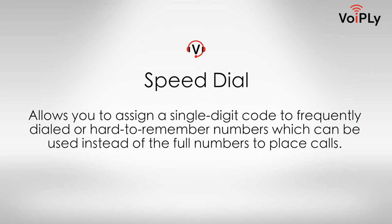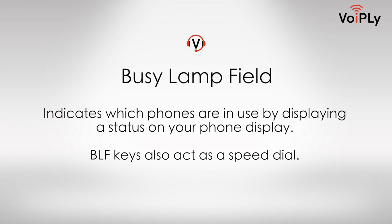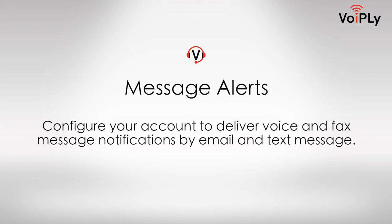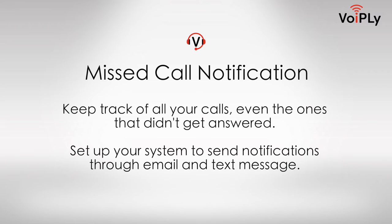Speed Dial: Allows you to assign a single digit code to frequently dialed or hard-to-remember numbers, which can be used instead of the full number to place calls. Busy Lamp Field: Indicates which phones are in use by displaying a status on your phone display; BLF keys also act as a speed dial. Message Alert: Configure your account to deliver voice and fax message notifications by email and text message. Missed Call Notification: Keep track of all your calls, even the ones that didn't get answered, with notifications through email and text message.